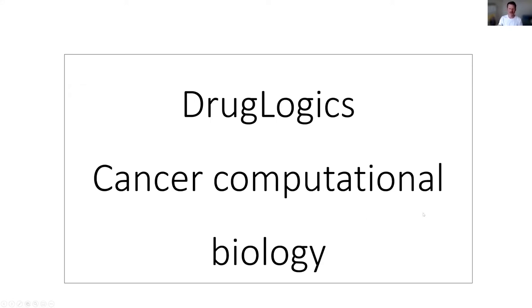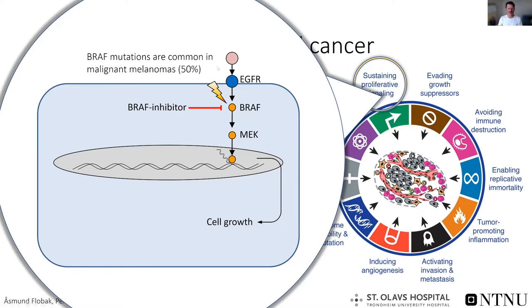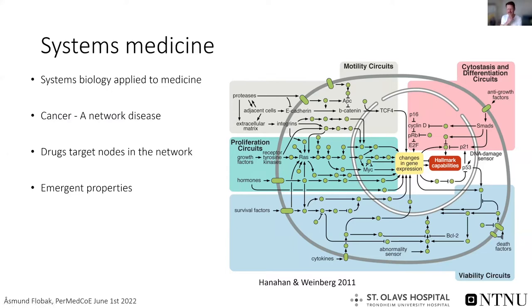Now I'm going to say some words about the computational side, which is the drug logics project. In particular I'm going to say something about drug synergies and drug combinations. Back to this simple model for BRAF inhibitors in malignant melanomas — in fact if you look at this cascade you see that you could in principle have blocked MEK instead of BRAF, or even block the two together. And in fact this is what is being done today — most patients that need therapy for a BRAF-mutated cancer will receive a combination of the two.